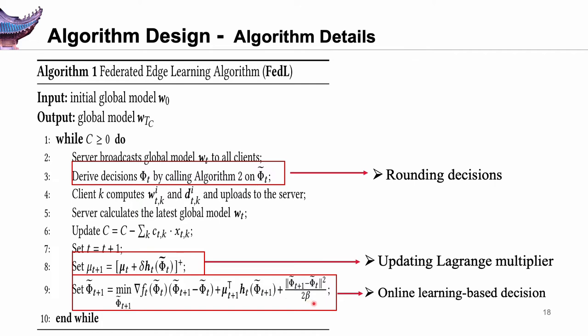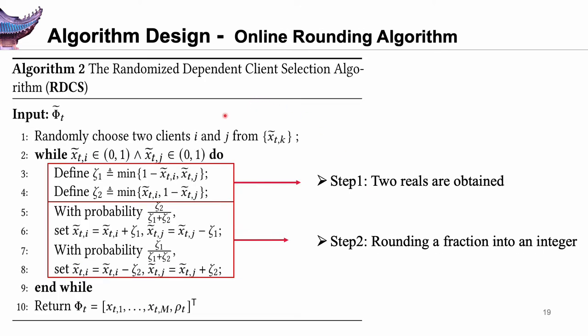Note that our aggregation method is similar to that of the classical aggregation algorithm. Given constraint 3e, fractional decisions are to be rounded into integral numbers. Therefore, we design a randomized dependent client selection algorithm. A rounding algorithm exploits the independence of selection decisions. The basic idea is that rounded-up decisions can compensate for rounded-down decisions. The decisions are not rounded aggressively using this dependent rounding algorithm.